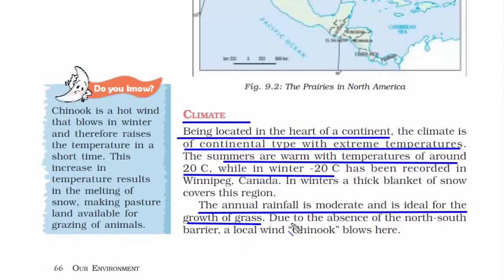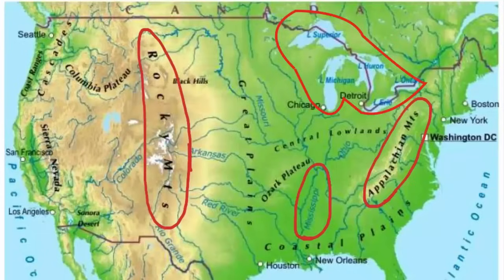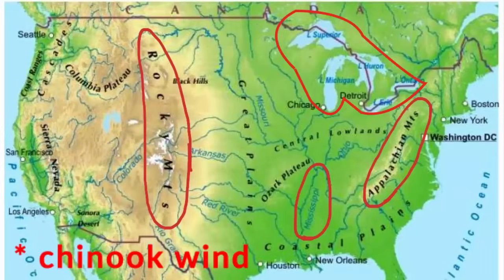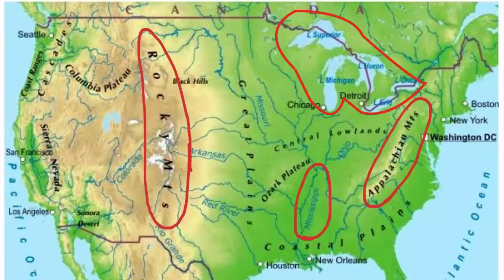That's why this place has a good amount of grass and it's called grassland. Due to the absence of a north-south barrier, a local wind called Chinook blows here. We saw that on the west they have the Rocky Mountains and on the east the Appalachian Mountains, so there is nothing on the north and south. When there is no natural barrier, wind is bound to blow freely. With all of these elements, this place is ideal for growing grass — hence it's a grassland.